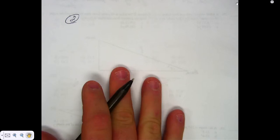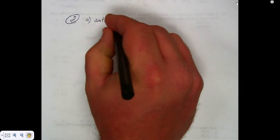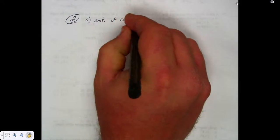How about we do number two? Number two, let's see what we're supposed to do. A, we're supposed to find what? Amount of coverage. And then B, we're supposed to find what?